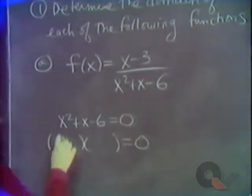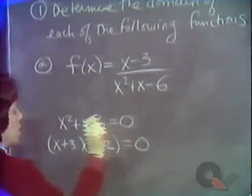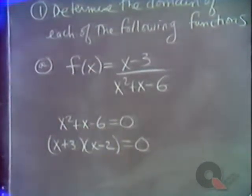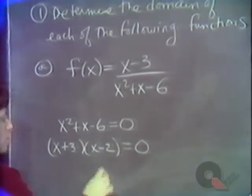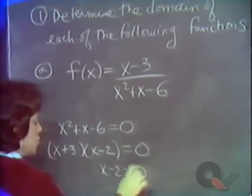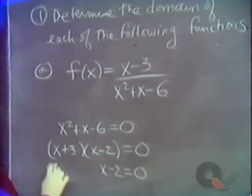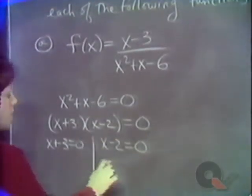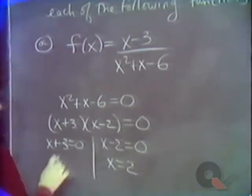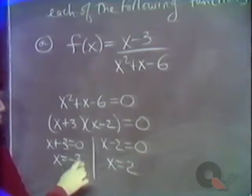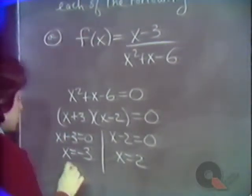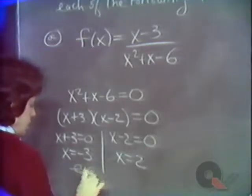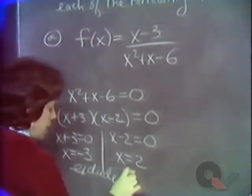We have x plus 3 times x minus 2 equals zero, so it gives us two solutions: x minus 2 equals zero and x plus 3 equals zero, giving x equals 2 and x equals minus 3. These are the bad values — the ones that cause division by zero — so we must exclude these values.